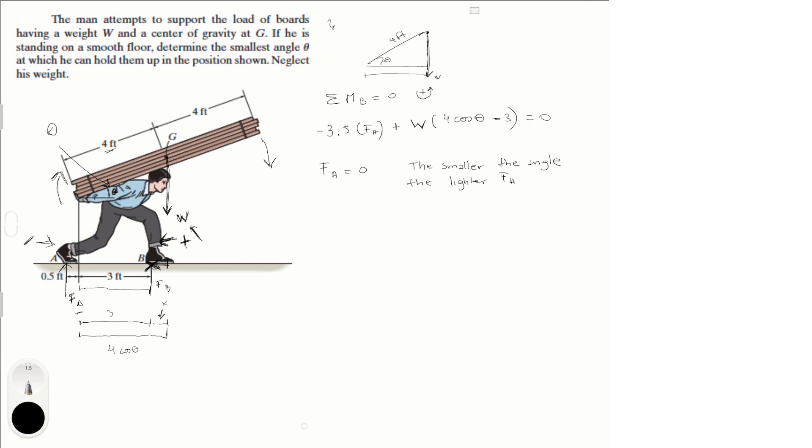That erases that. And W times four cosine of theta minus three is equal to zero. So theta is equal to the cosine inverse of zero over W plus three all over four. So theta is equal to 41.4 degrees. And this is the final answer.